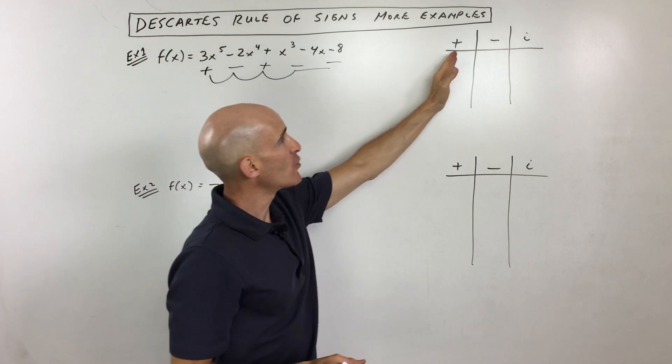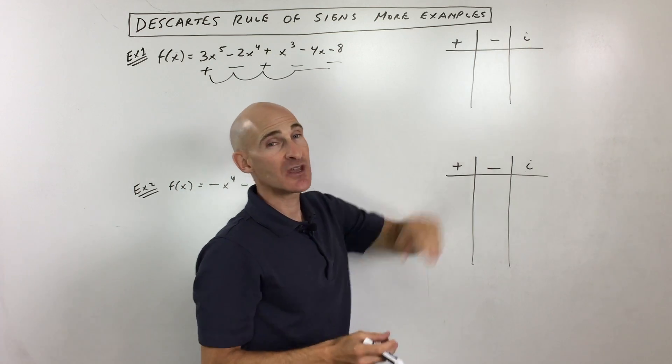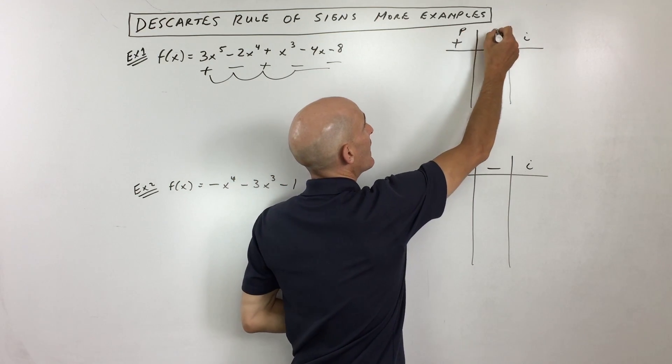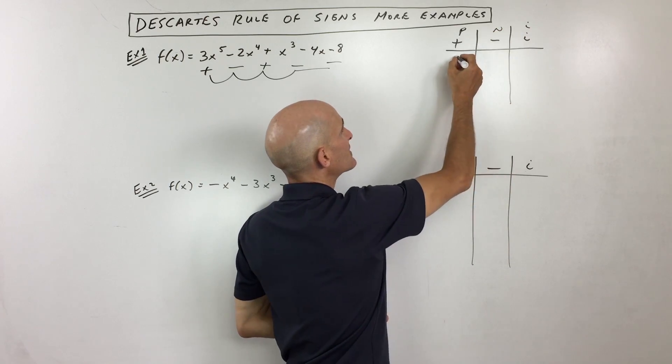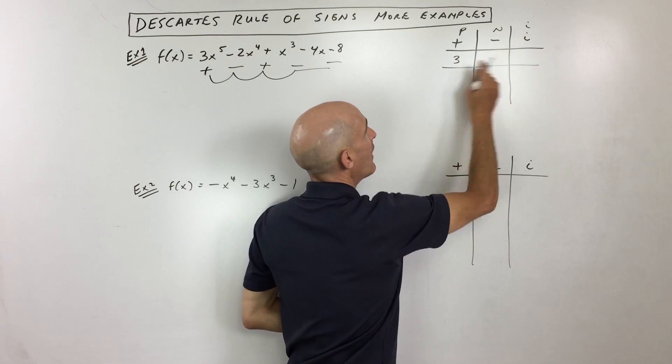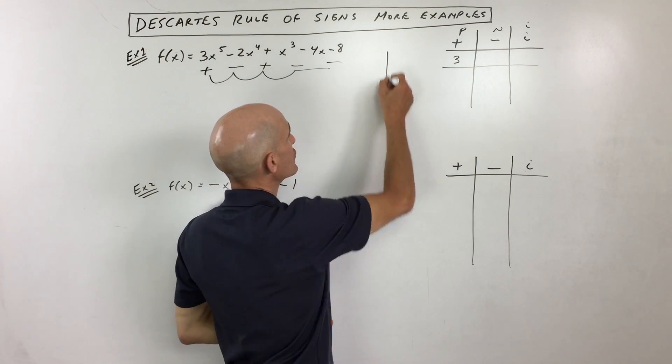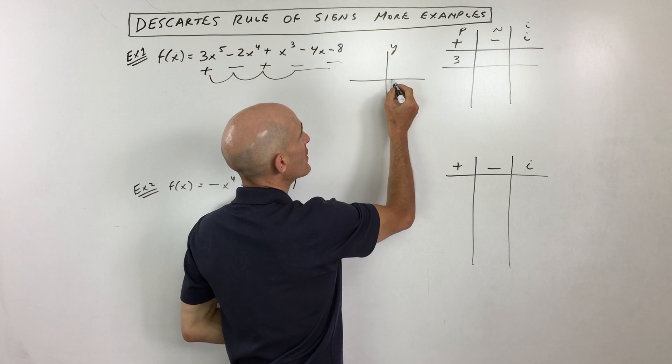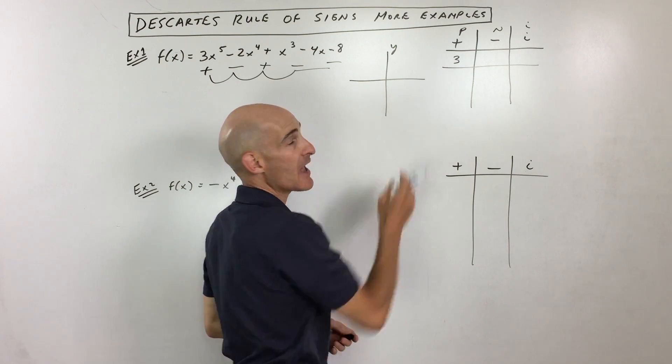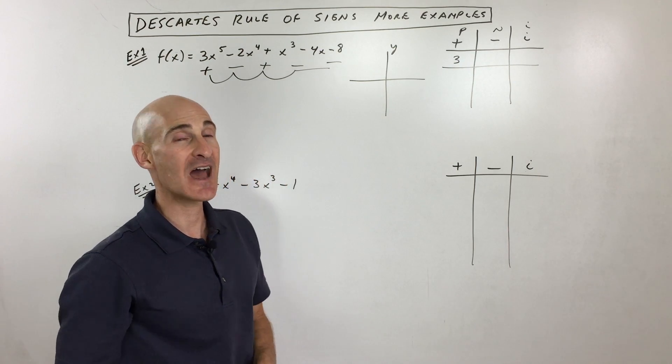So what that tells us is we go over to our positive, negative, imaginary chart over here. Sometimes this is called a P and I chart. And what that tells us is we have a maximum of three positive zeros. Now what does that mean, three positive zeros? It means that when you go to the right of the y-axis over here, it's going to cross that x-axis a maximum of three times.